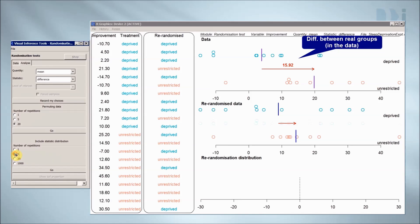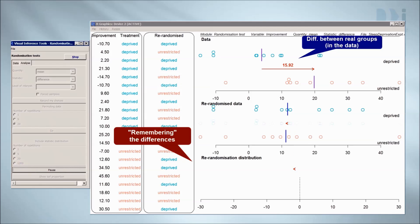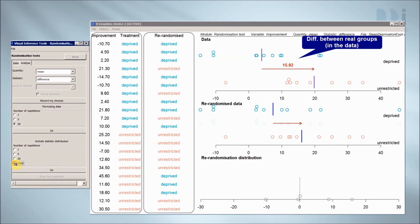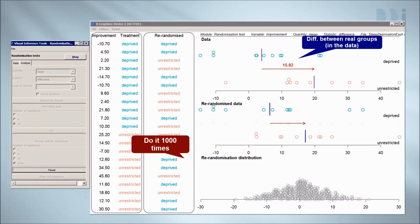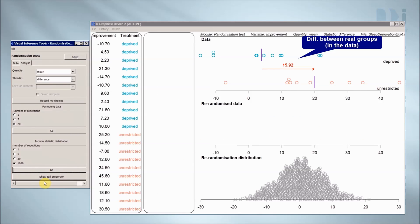Now let's do it a large number of times and keep track of all the results. We keep a track of the lengths of the arrows, just as we did with the randomization variation module. Now let's do it a thousand times. The dot plot has recorded all the differences we've got from a thousand re-randomizations.